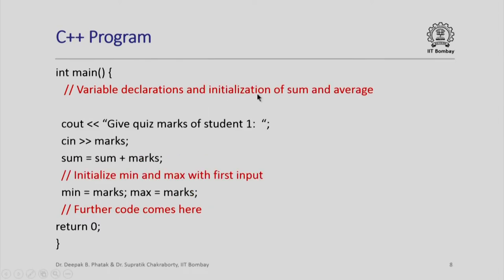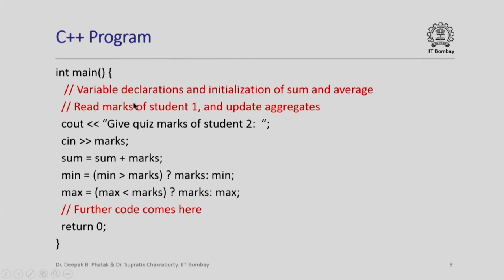After declaring and initializing the variables, we could print the message "give quiz marks of student 1", read the marks, add the marks to the running sum — initialized to 0 — and since this is the first student's marks, we could initialize both min and max with the value of marks itself.